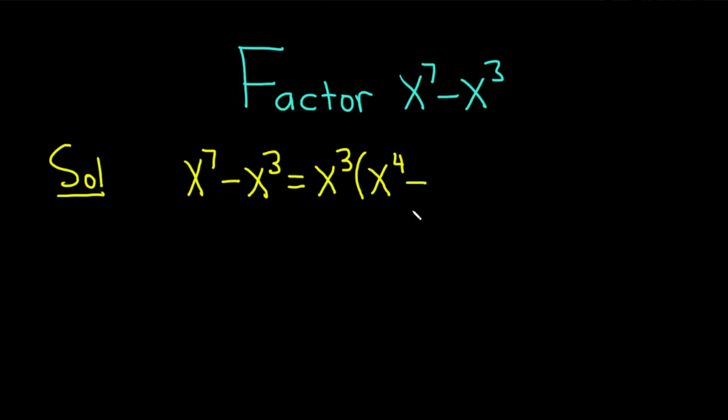And we have a minus. Then again, you ask the question, what do you multiply by x cubed in order to get x cubed? Well, just 1.